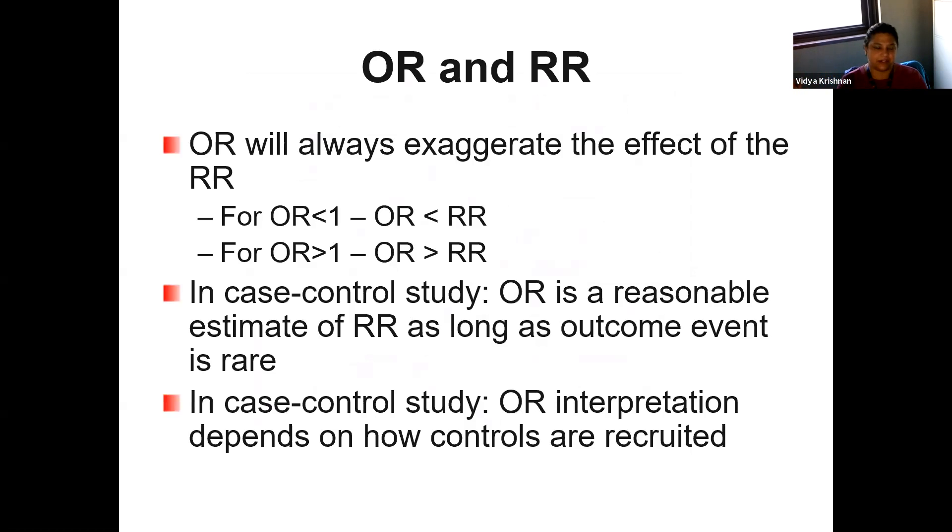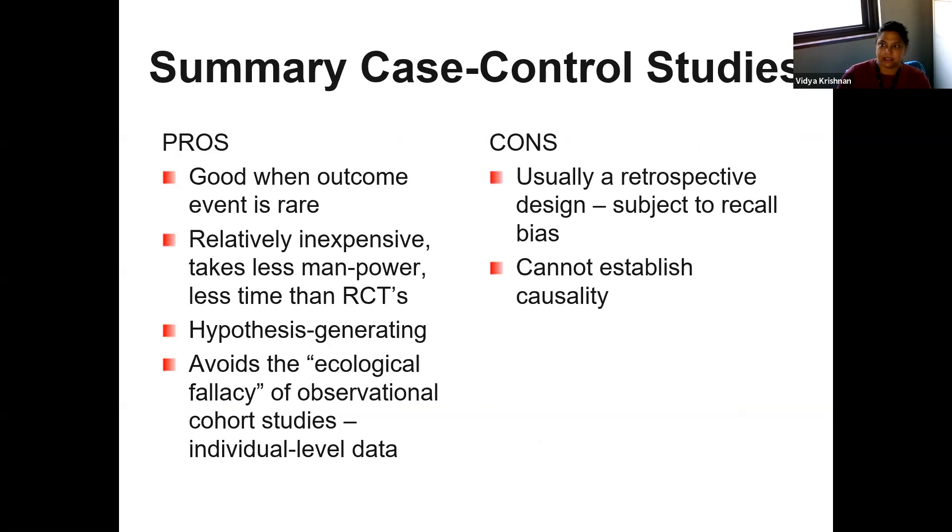So the odds ratio will always exaggerate the effect of the relative risk. If the odds, for a relative risk that's less than one, the odds ratio would be much less, and the opposite is true. In case control studies, odds ratio is a reasonable estimate of relative risk, as long as the outcome is rare. Yeah, the odds ratio interpretation depends on how you recruit patients. So I guess in summary there, case control studies are very good when you have a rare outcome, because it's really an efficient way of studying that disease of interest. It's relatively inexpensive, it takes less manpower, and it's hypothesis generating as well. And it avoids ecological fallacy of observational cohort studies, because you're really looking at data at an individual level. The cons of it is that you can't establish causality. It's usually a retrospective design, so you're subject to recall bias.